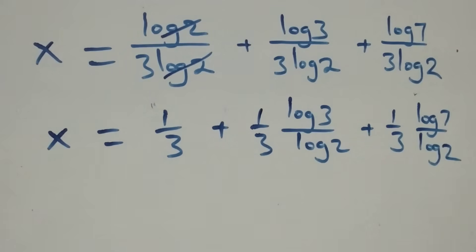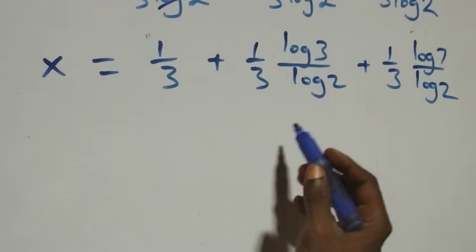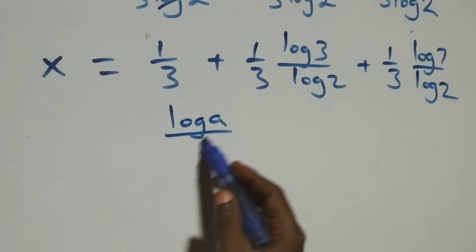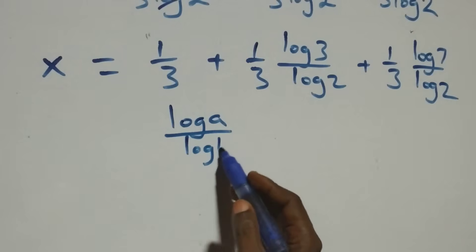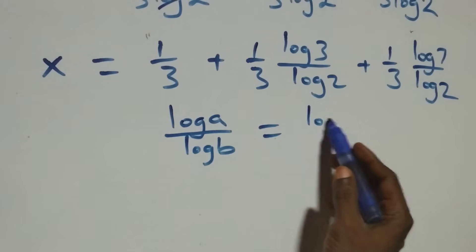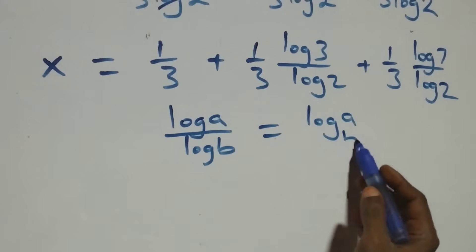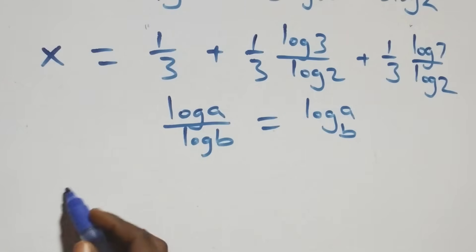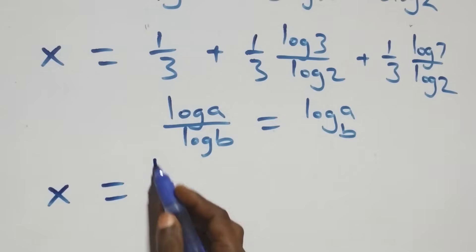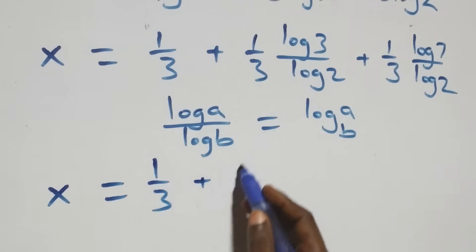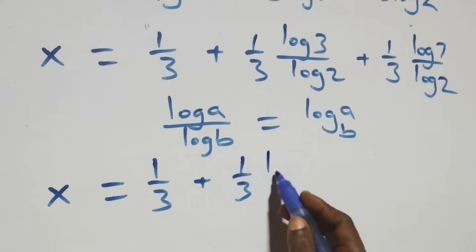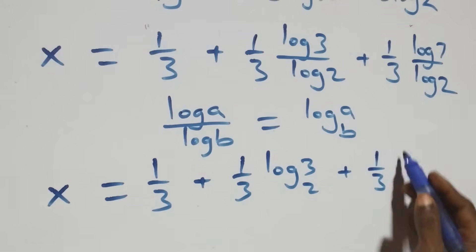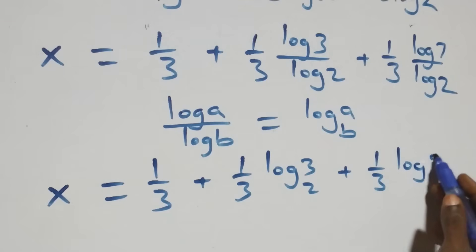The next step: we apply the change of base formula, where log a over log b is the same as log a to base b. So what we have becomes x equals 1 over 3, plus 1 over 3 times log 3 base 2, plus 1 over 3 times log 7 base 2.